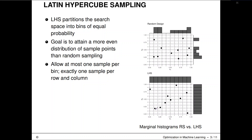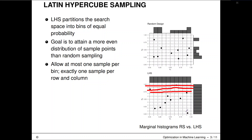For LHS, if you look into the bins and rows and columns, you can see that for each column there's only one point, and for each row there's only one point. The result is that if you look at the marginal distributions, the true marginal distribution will be uniform for both random design and LHS. But for a concrete sample, for random design there will be some variation in the histogram, whereas for LHS this will be completely uniform — because of having exactly one point per cell covered per row and per column. This kind of evens things out even further.